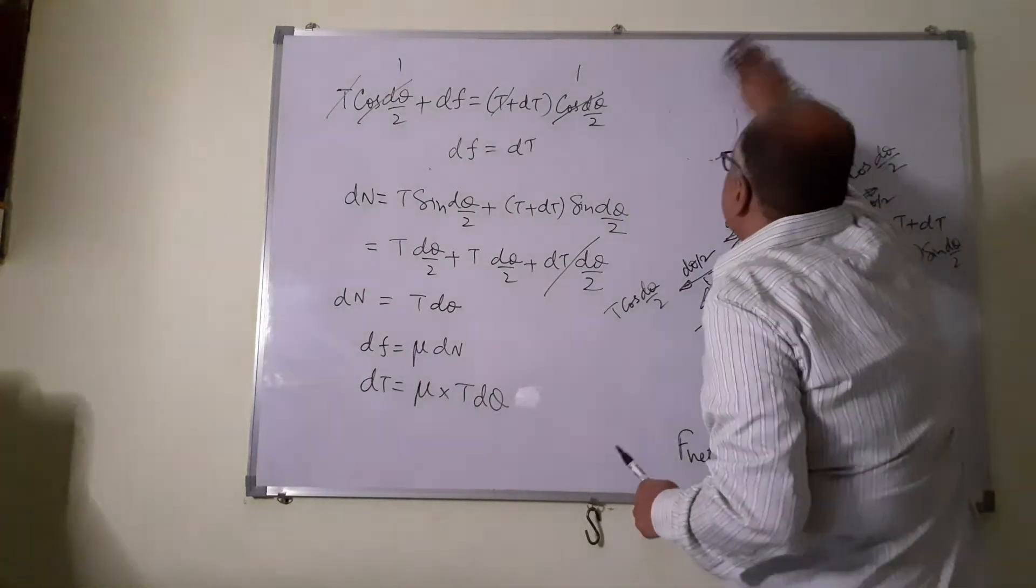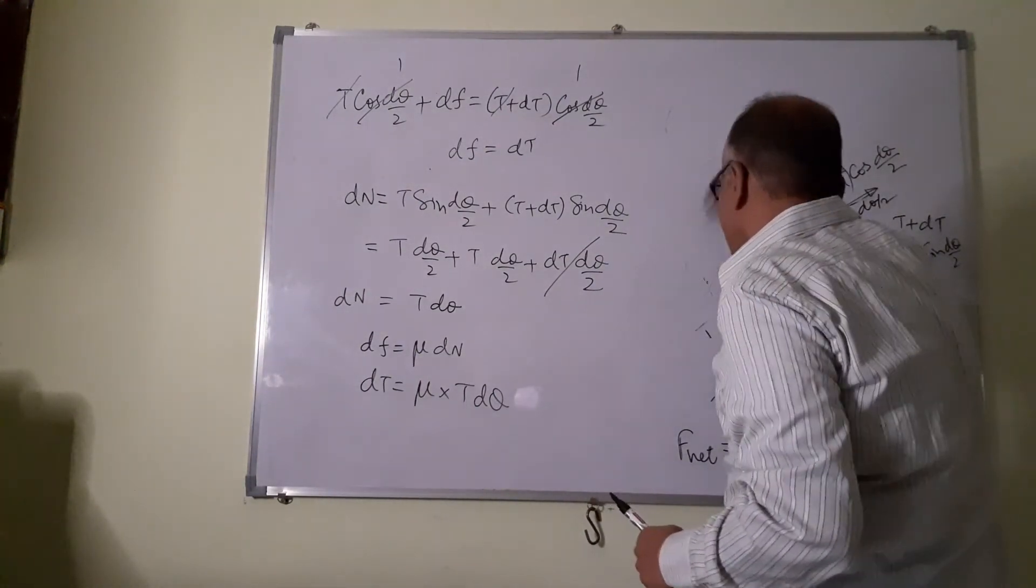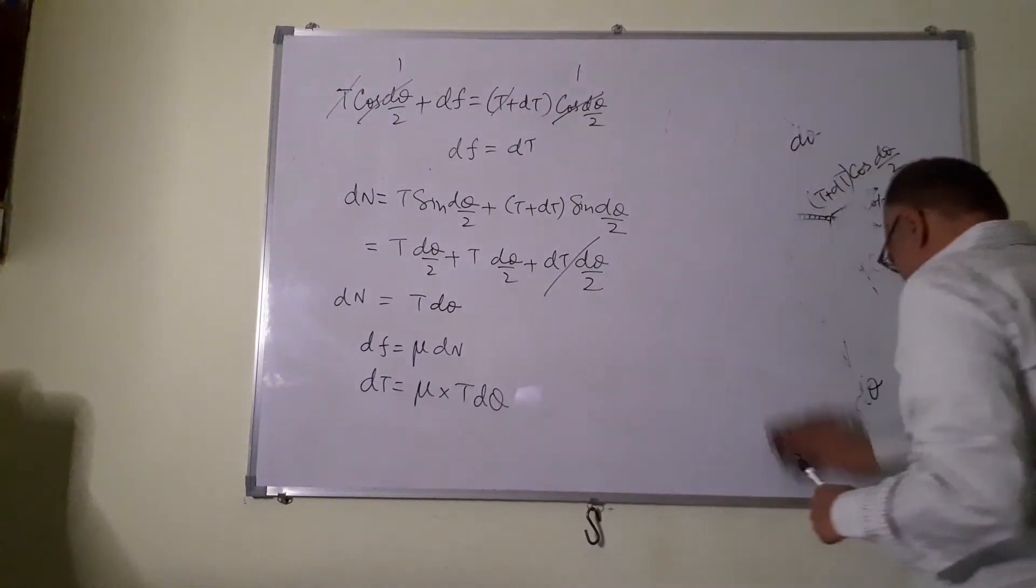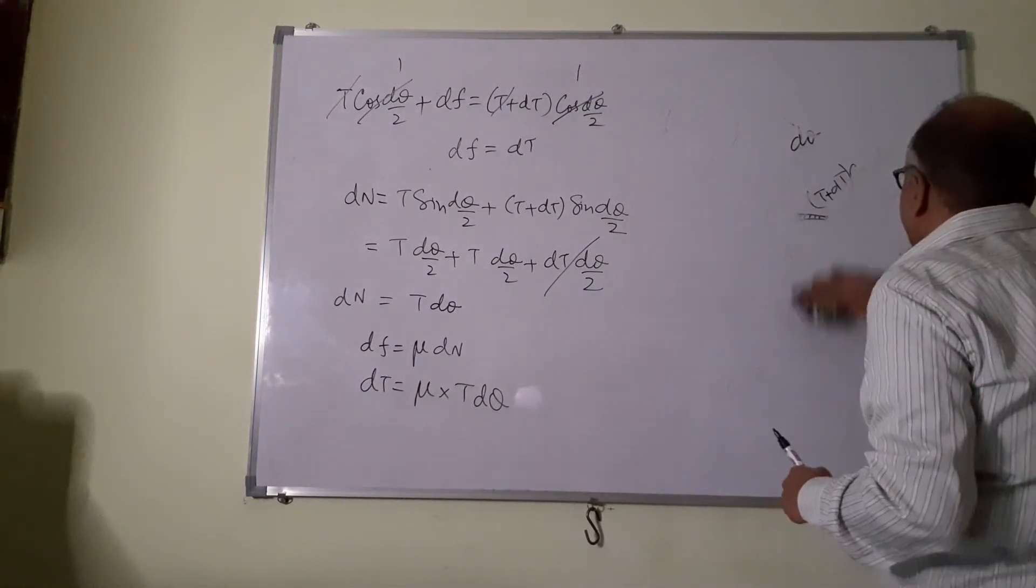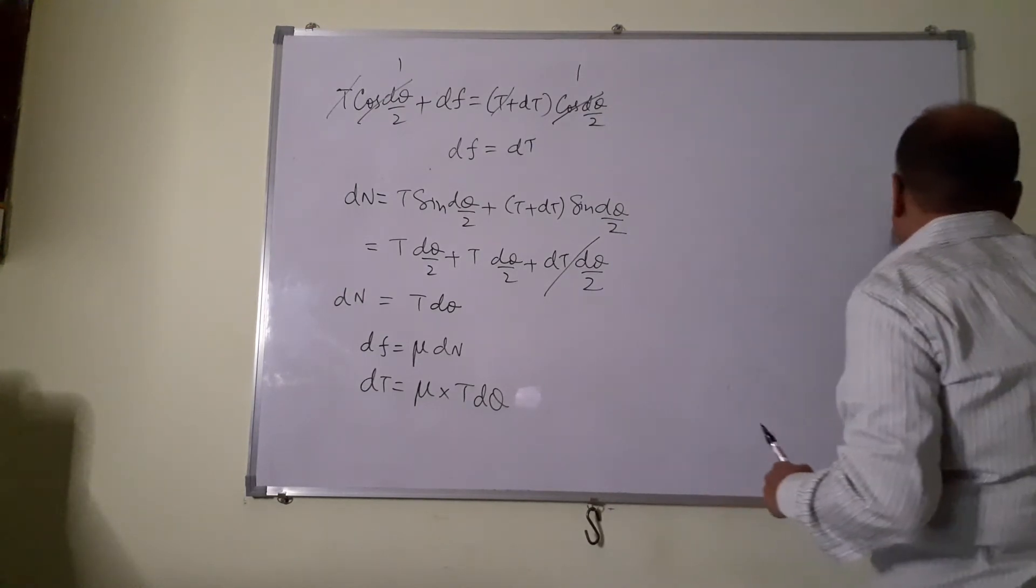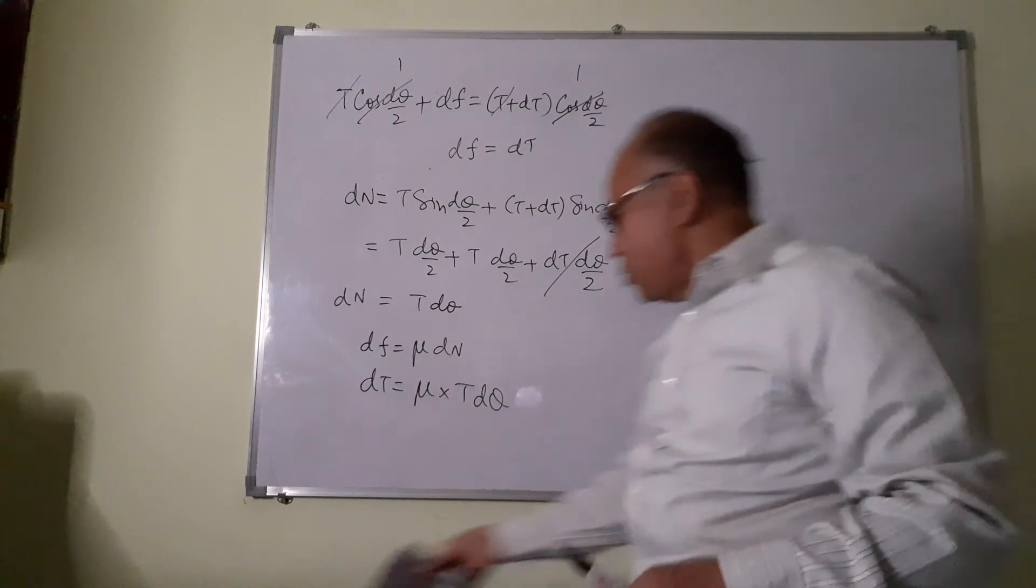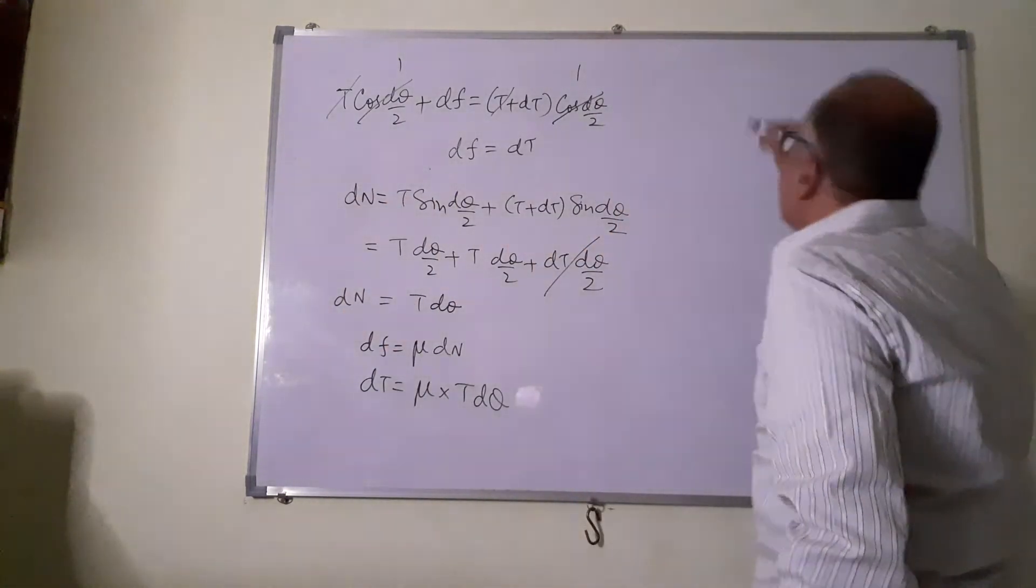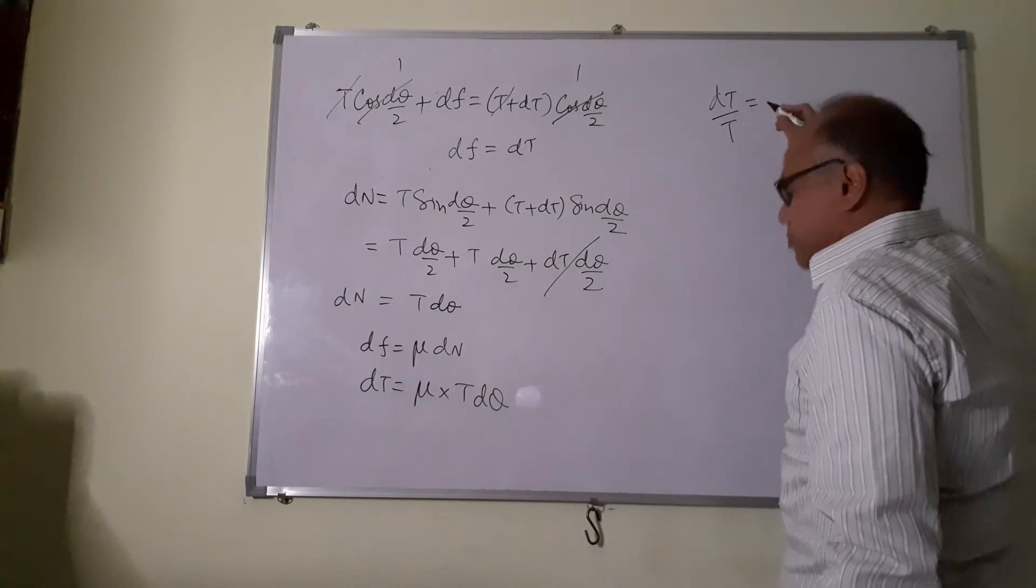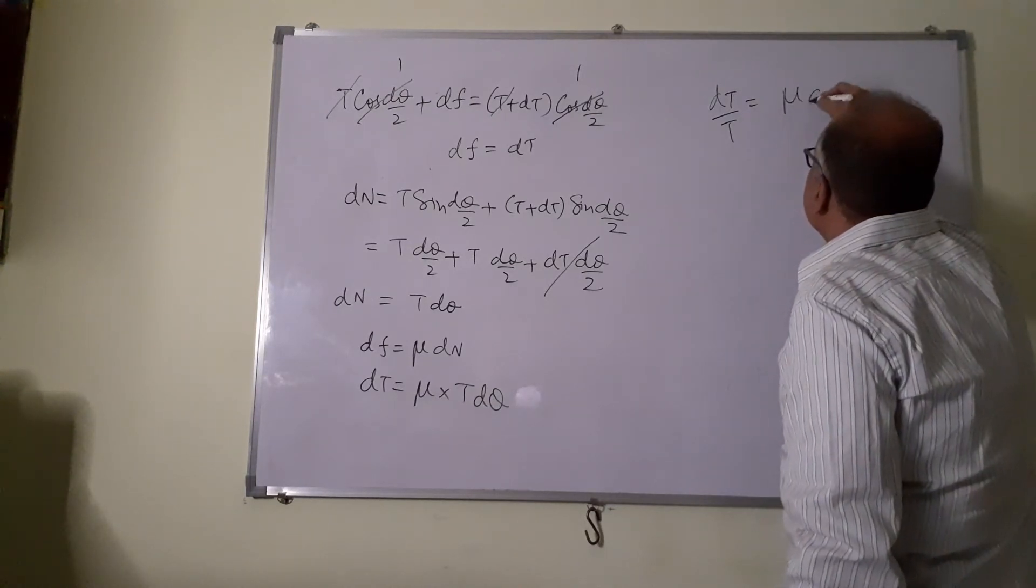So now we will simply get all the tangent terms on one side. Dt by T is equal to mu d theta.